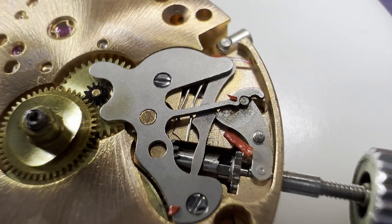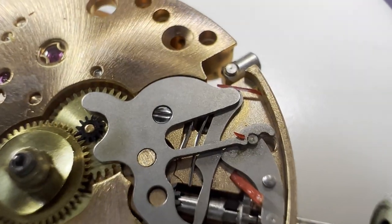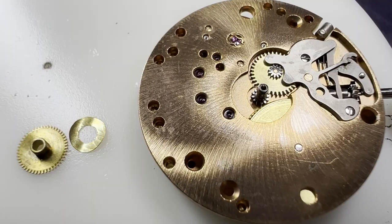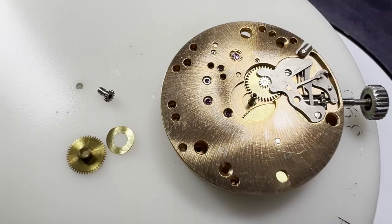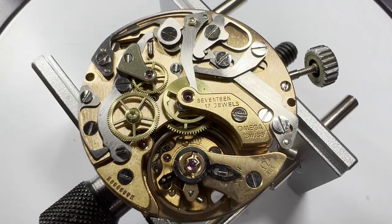You can see that the paint even got into the keyless and motion works under the dial. This isn't good. With some of the paint removed by hand, the hour wheel is removed, along with the cannon pinion, then the watch is flipped over.